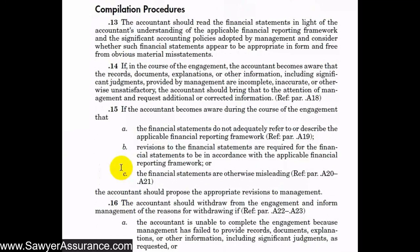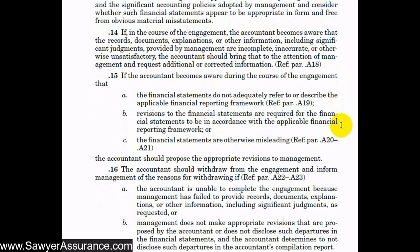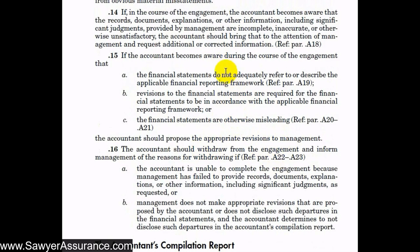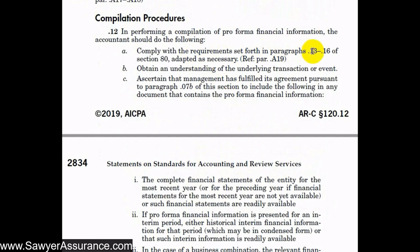Paragraphs 13 through 16 of ARC Section 80 cover compilation procedures for historical information, requiring us to read the financial statements to see whether they appear to be free from obvious material misstatements, and to request additional information if anything appears incomplete or inaccurate. We should also propose revisions to management if the financial statements don't adequately refer to or describe the financial reporting framework, or if the financial statements are misleading. If management refuses to make these revisions, we should withdraw from the engagement.